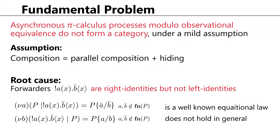Forwarders are processes that forward a message from one point to another. This process forwards a message from channel a to channel b. The first equation — forwarders as right identities — is a well-known equational law for the asynchronous pi calculus, but the second one, forwarders as left identities, does not hold in general.